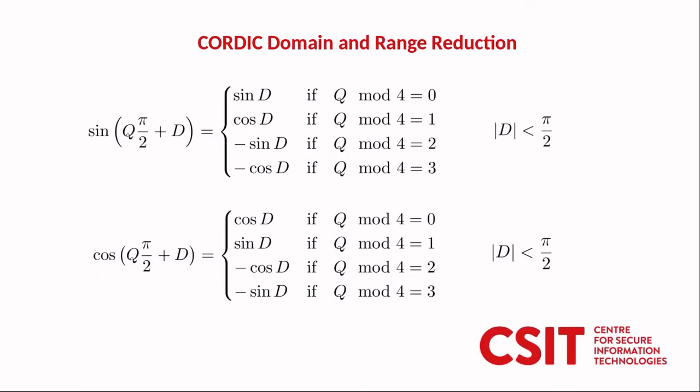We take advantage of the periodicity of cos and sine so we calculate cos and sine in the restricted range of 0 to pi over 2 and we then take advantage of the periodicity and restore the value to what it would be in any of the other three quadrants.